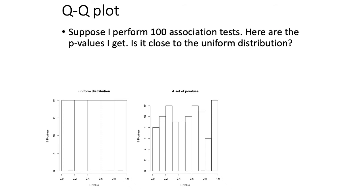The answer to that question: if you performed 100 independent tests in which the null hypothesis is true in every single one, you'd expect to see one test with a p-value less than 0.01. Similarly, you'd expect to see five p-values less than or equal to 0.05, and so on. This means that if you drew a histogram of the p-values from all your tests under the null, you'd expect to see the uniform distribution.